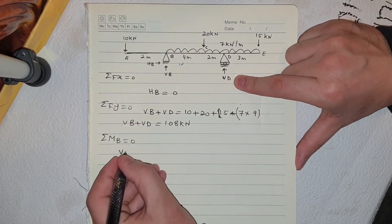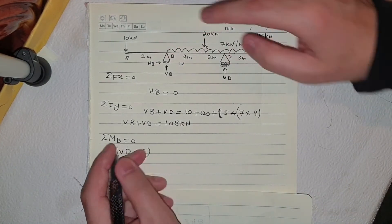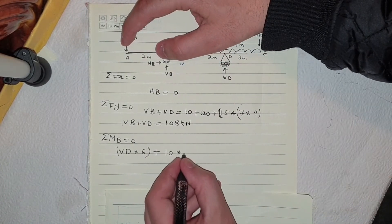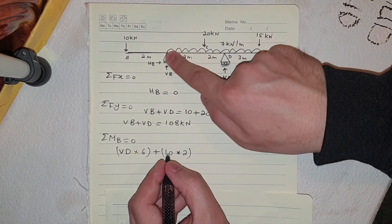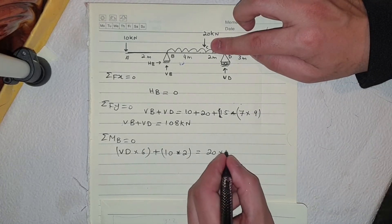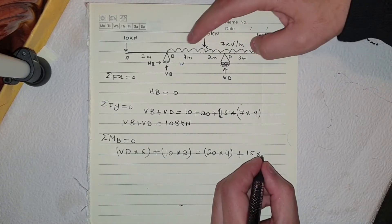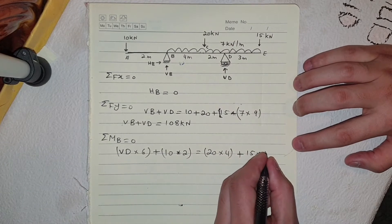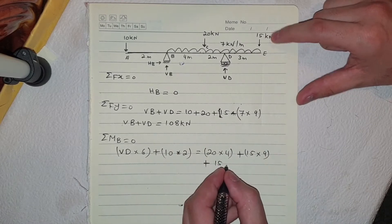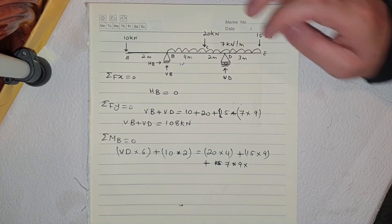So we have Vd times the distance, which is 6. Plus 10 kilonewton at a distance of 2 meters from point B. Then 20 kilonewton times 4, plus 15 kilonewton times the total distance of 9 meters. And we have the UDL: 7 times 9, times 9 divided by 2, which gives 4.5.